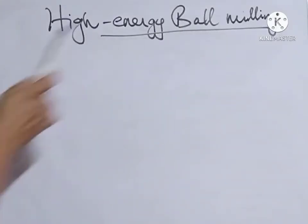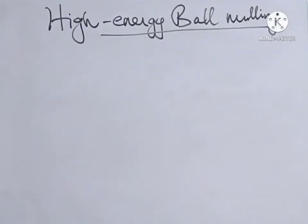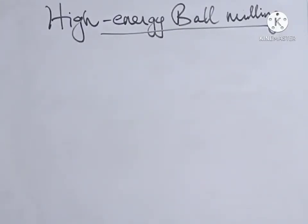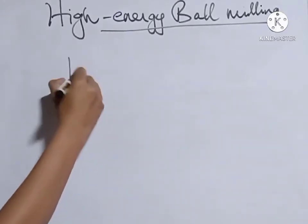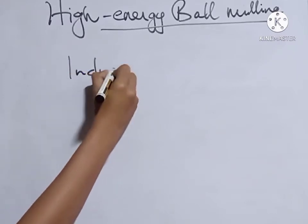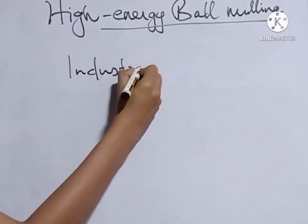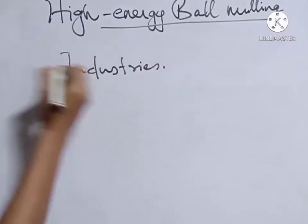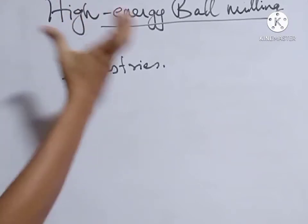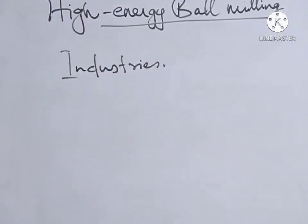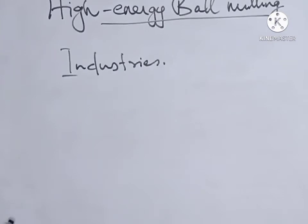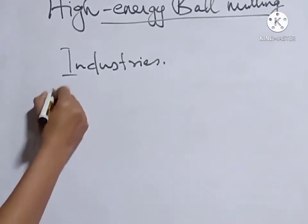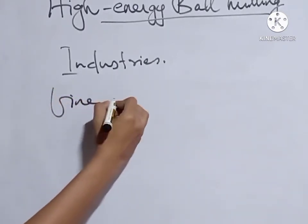High energy ball milling method for the preparation of nanomaterials. This is the most important method used in industries to prepare nanomaterials. By using high energy ball milling method, we can easily prepare fine particles of nanomaterials.